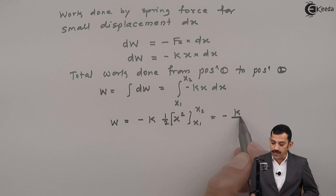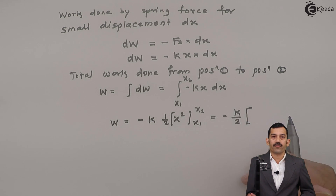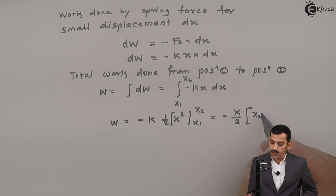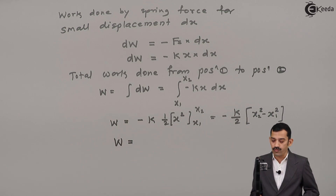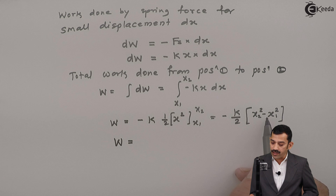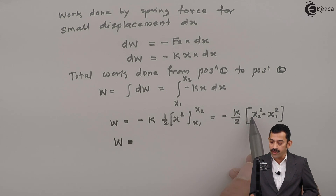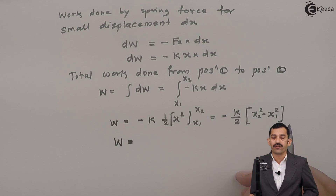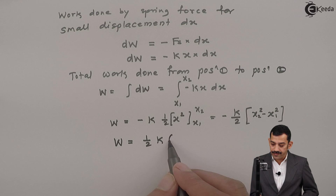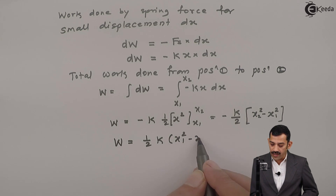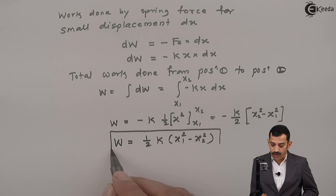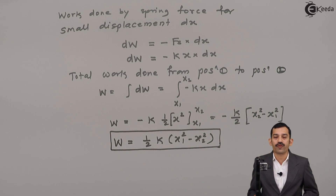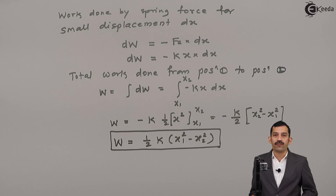Therefore, work done by spring force when the end of spring moves from position 1 to position 2, where deformation varies from x1 to x2, is: W = ½k(x1² − x2²). In this formula, k, x1, and x2 are important. Whenever substituting values, k must be in Newtons per meter, and x1 and x2 must be in meters.